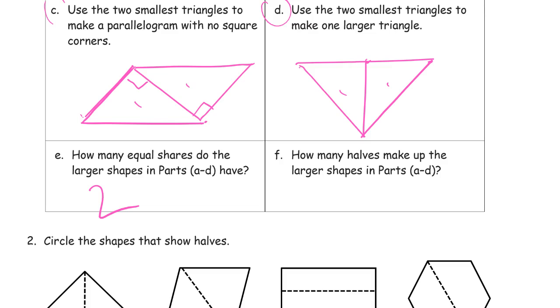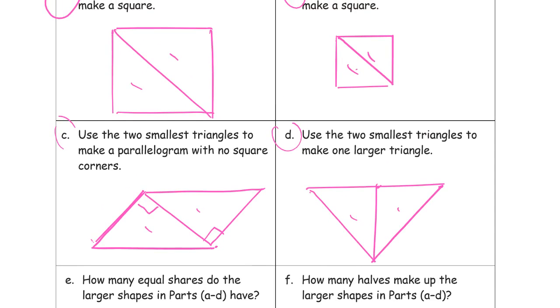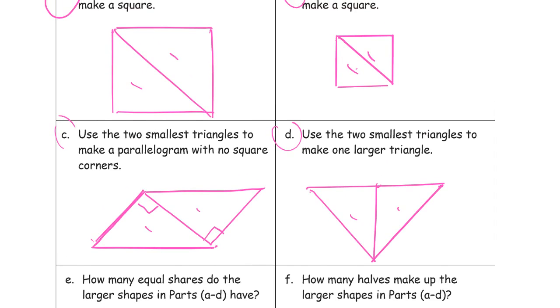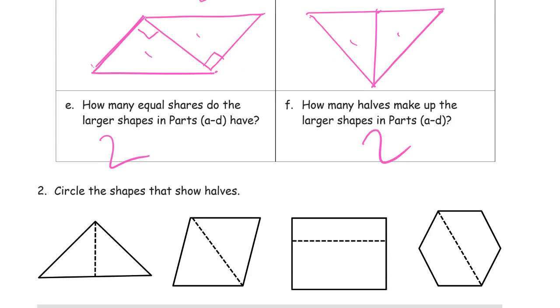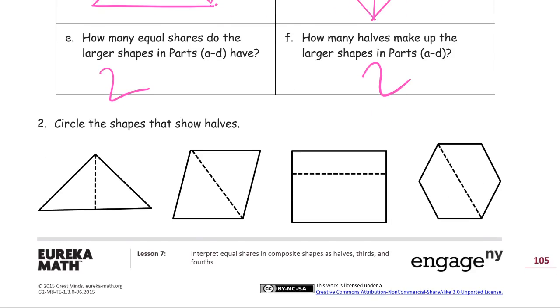How many halves make up the larger shapes in all of those parts? So each one has how many halves? Well, each triangle in this square is half of the square. Each triangle in this square is half of the square. Each triangle in this parallelogram is half because they're equal and there's two of them, they're halves. So how many halves are there? There's two halves for all of the shapes. Two equal shares, and they're both halves for each one.